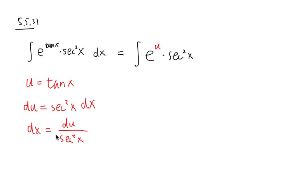dx is the same as du over secant square x. So let me write this down: du over secant square x. And once again, we see the cancellation right here. Now the integral becomes the integral of e to the u du.